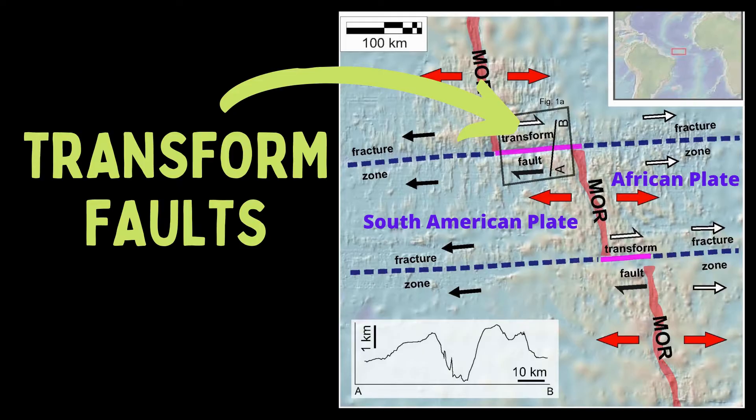The zigzag pattern of mid-ocean ridges reflects the alternation of spreading segments with transform faults. The overall shape of the ridge mimics the edges of Africa and South America, and so it was largely inherited from the shape of the original rift that split the two continents apart.